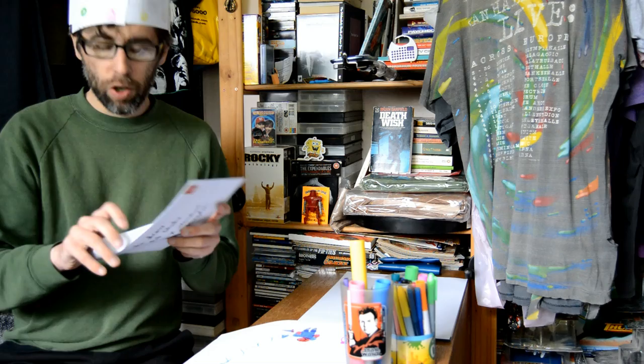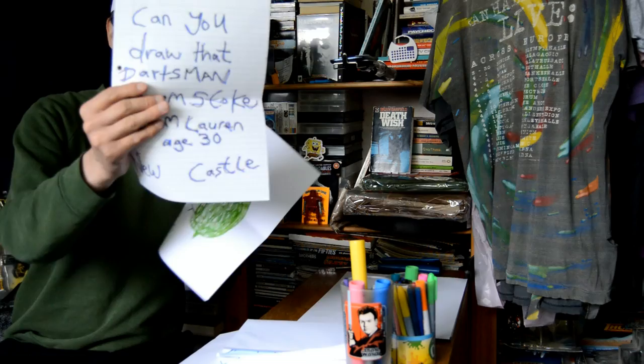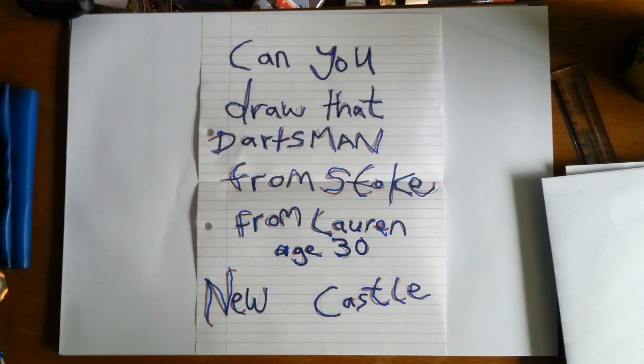We've also got this letter sent to us. It's really good and always good to get some viewer requests. Let's see, it's a nice handwritten letter. It says: Can you draw the dartsman from Stoke? I'm assuming it must be Phil Taylor because he's 17 times world champion. It's from Lauren, age 13, Newcastle. Thank you.